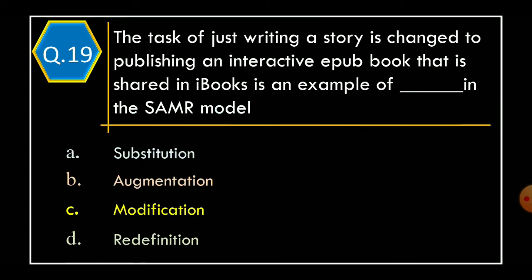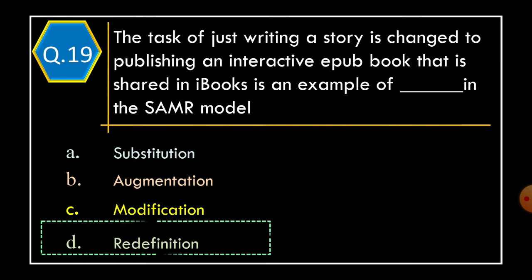Question 19/20: The task of just writing a story is changed to publishing an interactive EPUB book that is shared in iBooks. This is an example of which step in the SAMR model? Option A: Substitution. Option B: Augmentation. Option C: Modification. Option D: Redefinition. And the correct option is Option D: Redefinition.